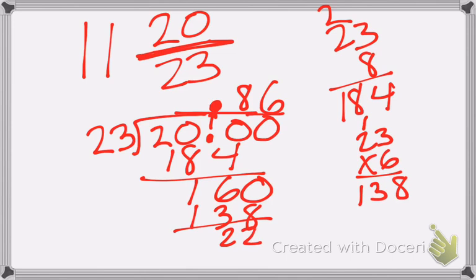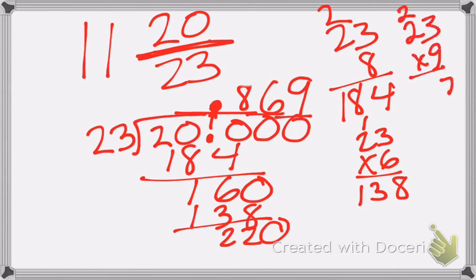Times six will give me 138, which will leave me with 22 left over. Now, a really common mistake is that some people would think I can stop right here because I have my tenths place and my hundredths place. But I really still need to do one more decimal because I need to know whether my hundredths place is going to get rounded up to 0.87 or if it's going to stay at 0.86. The only way to do that is to carry it out one more decimal place. So I'm going to add one more zero. 23 goes into 220 nine times. So I can now use that 9 to see that I'm going to need to round that 6 up to a 7.